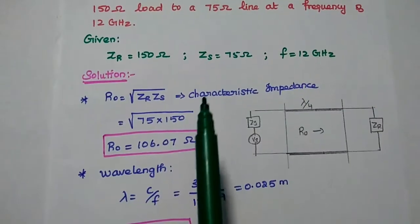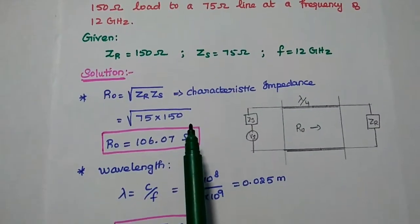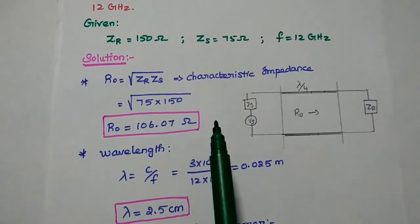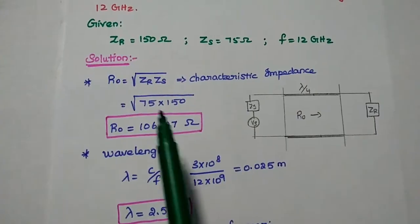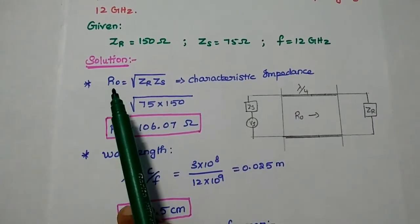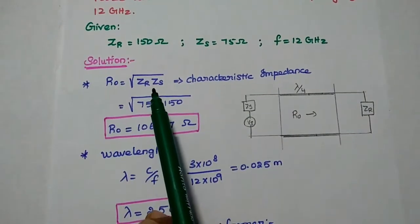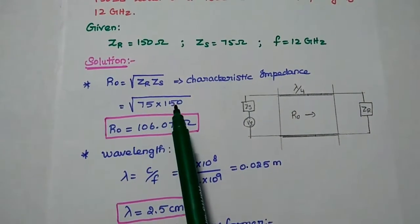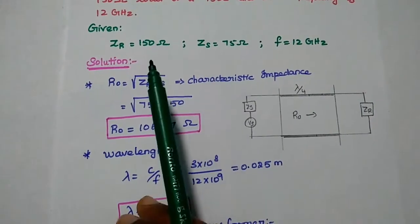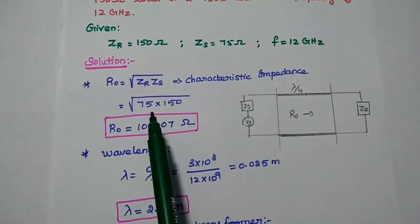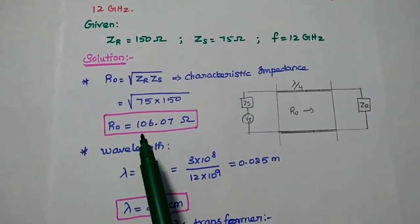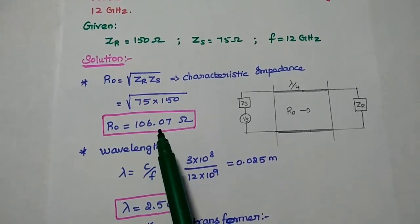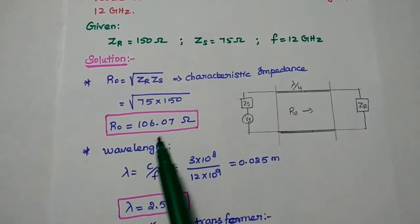Now we are going to determine the characteristic impedance and the length of the quarter wavelength. The formula is R0 is equal to square root of ZS into ZR. Substituting the values of ZS and ZR in this formula, the characteristic impedance R0 is equal to 106.07 ohm.